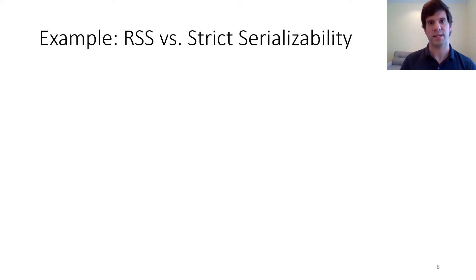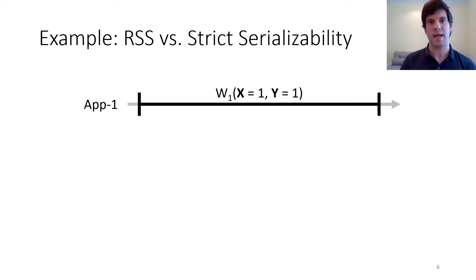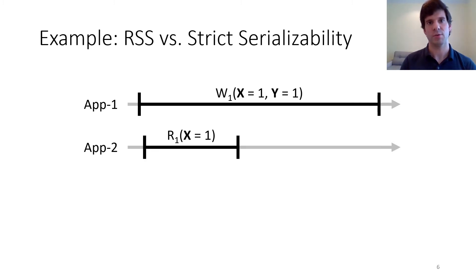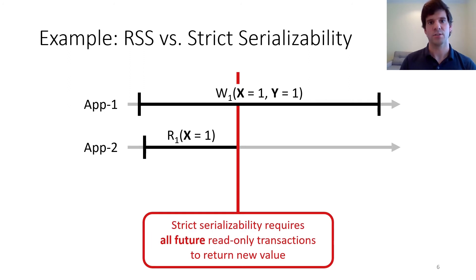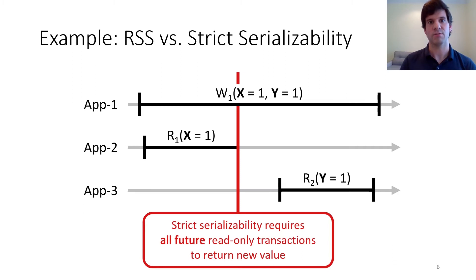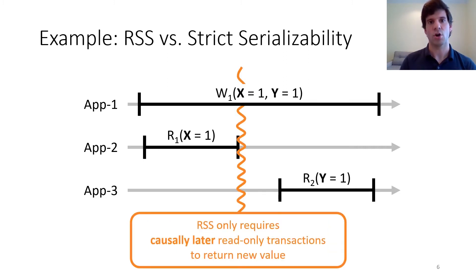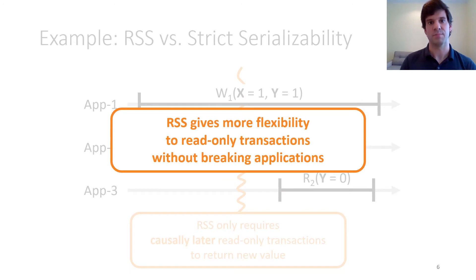Let's look at an example to understand how RSS and strict serializability differ. Suppose we have some application process updating keys X and Y from 0 to 1. Here, time flows from left to right and the vertical bars denote the beginning and end of the transaction. Now suppose some other process reads X. Strict serializability requires all future read-only transactions to also see process 1's writes, so process 3's read of Y must also return 1. On the other hand, while a write is in progress, RSS only requires causally later read-only transactions to return the new writes, so R2 can return 1 or 0. RSS thus gives more flexibility to read-only transactions, which enables new service designs, and because RSS respects causality, it provides this flexibility without breaking applications.